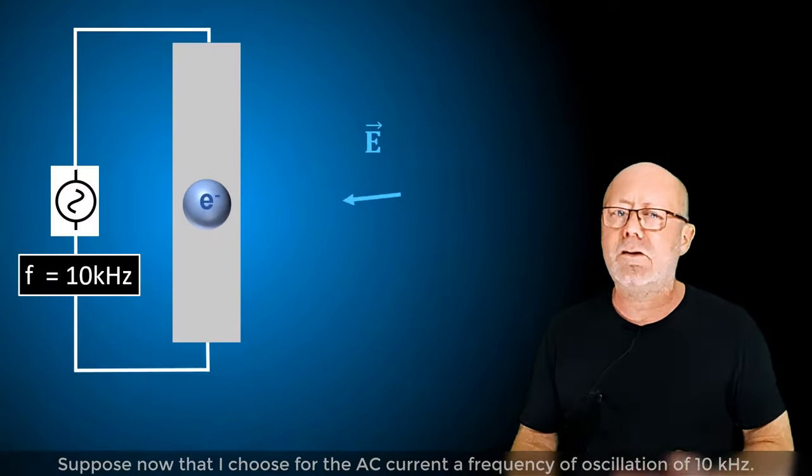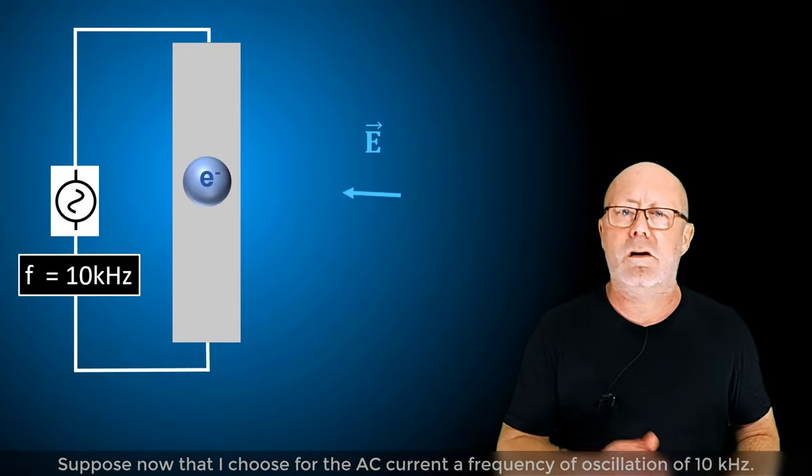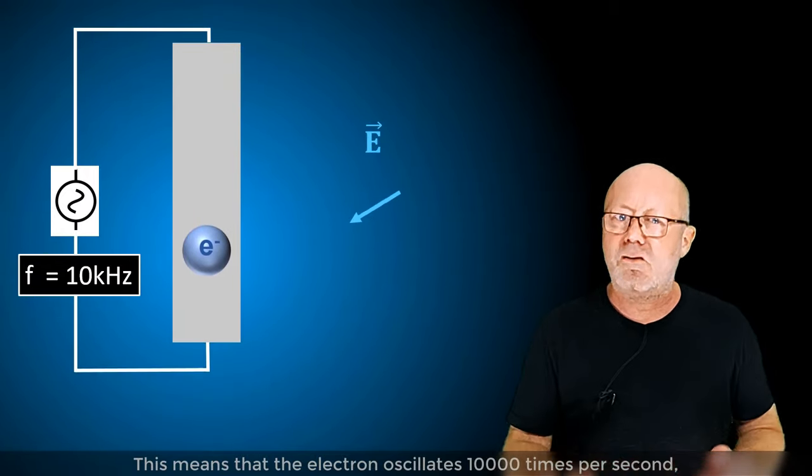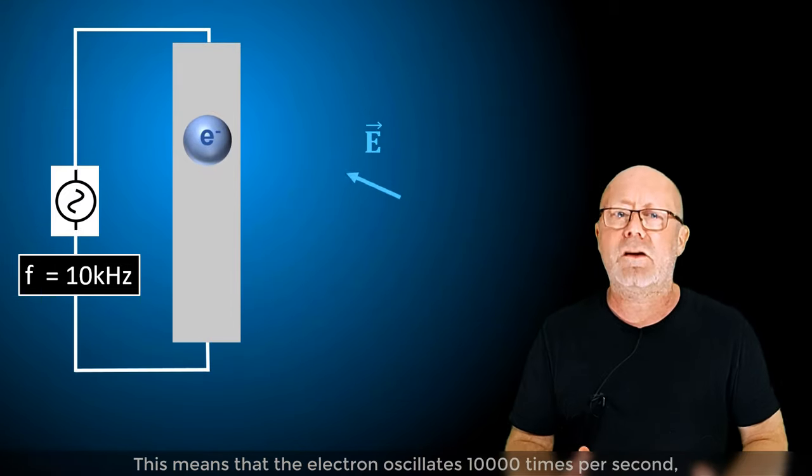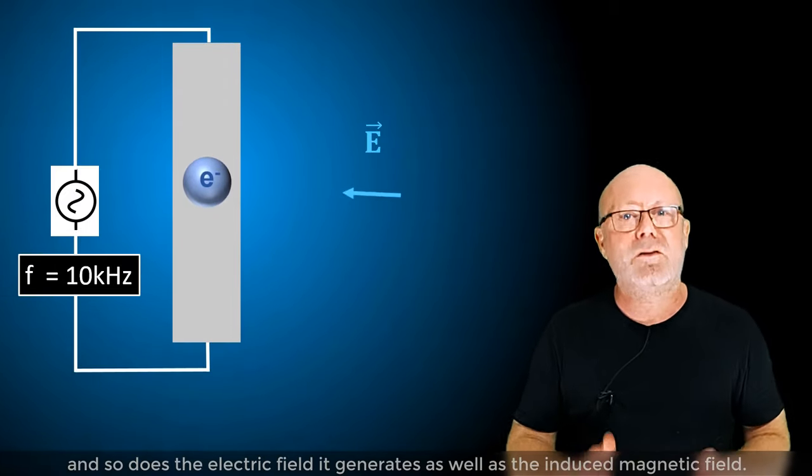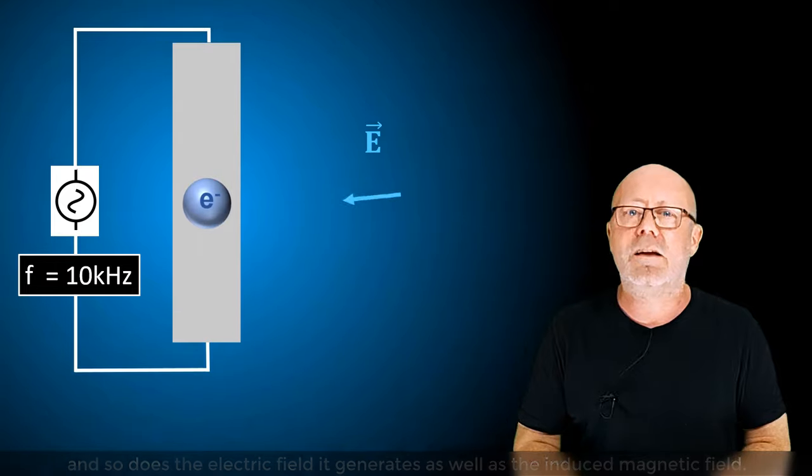Let's go back to our electron. Suppose now that I choose for the alternative current a frequency of oscillation of 10 kHz. This means that the electron oscillates 10,000 times per second, and so does the electric field it generates as well as the induced magnetic field.